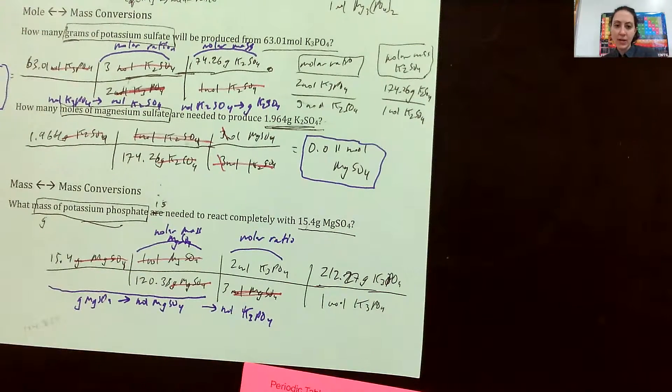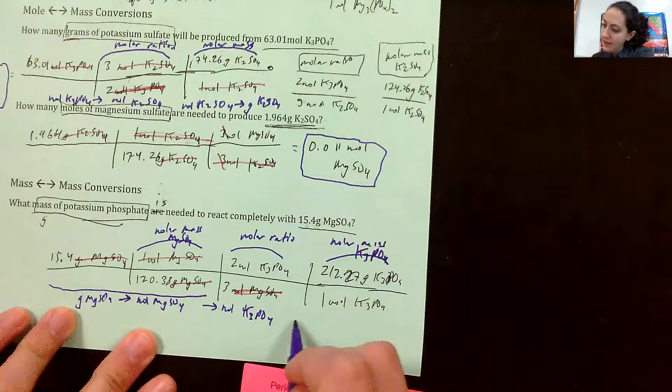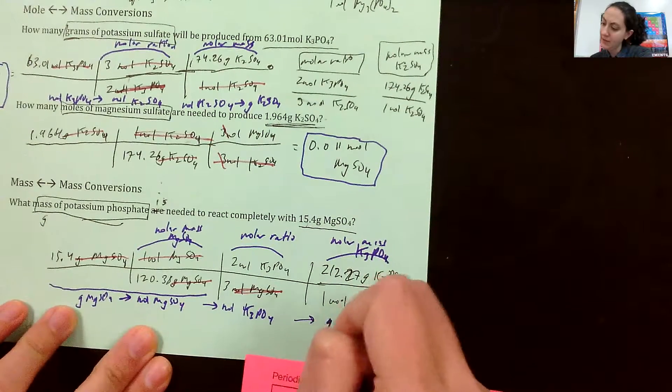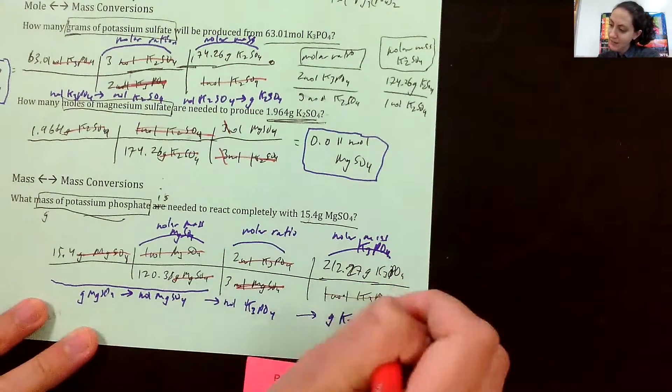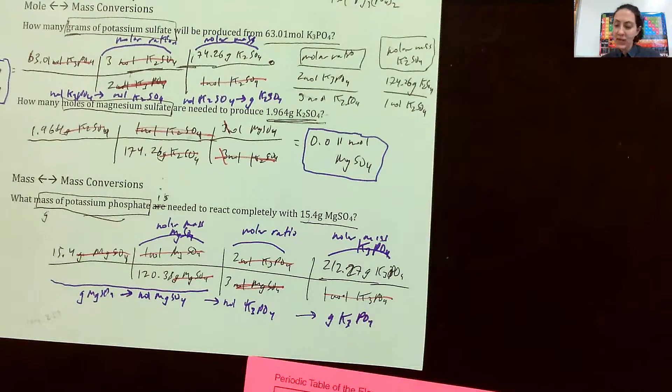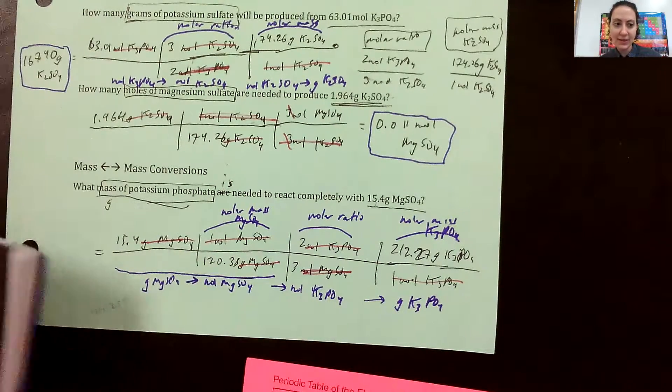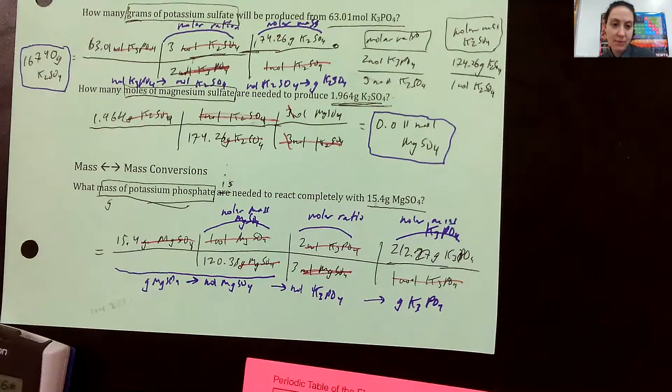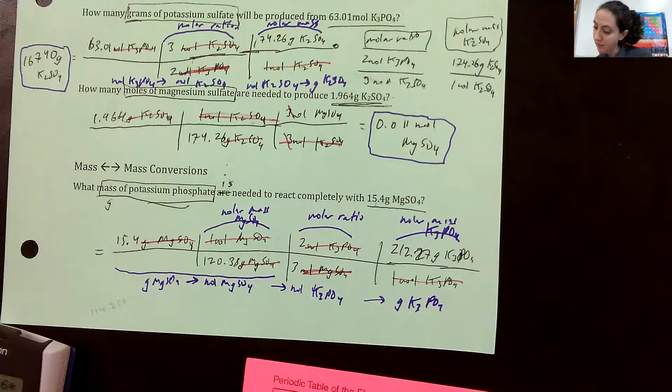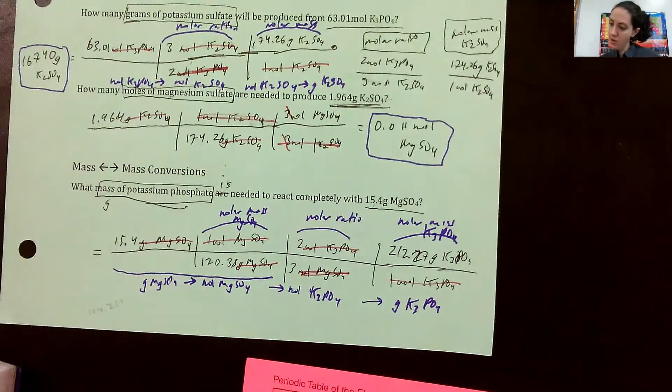So for this one, we now, this is the molar mass of K3PO4. And in this step, we are converting from moles of potassium phosphate to grams of potassium phosphate. Our moles cancel out, moles of potassium phosphate cancel out. And so now we just have to do the last bit of math. I think I ran out of space on this side. So I'm going to put the answer off to the side here. So it's going to be times two divided by three divided by 120.38 times 15.4. And that's going to be 18.10 grams of potassium phosphate.